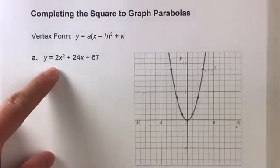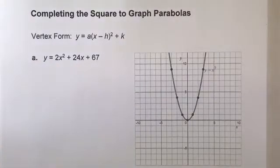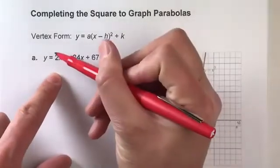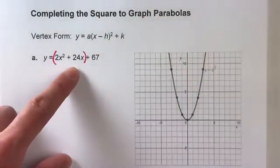So let's do this first one. y equals 2x squared plus 24x plus 67. Just like last time, my first step is I'm going to put parentheses around my first two terms that have the x squared and the x in them.